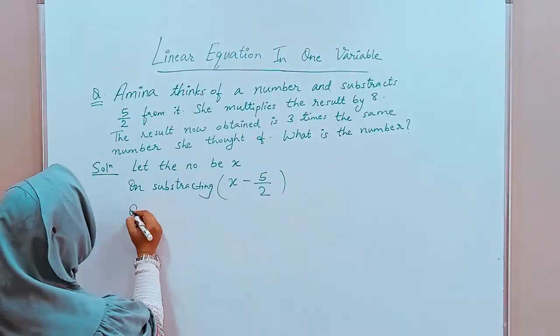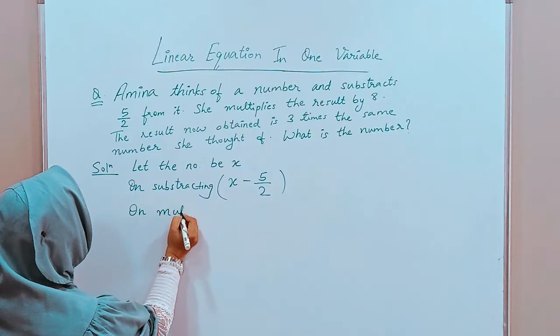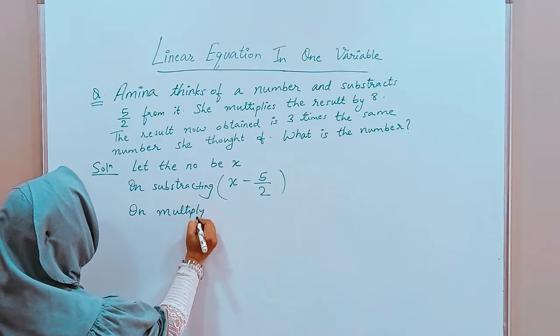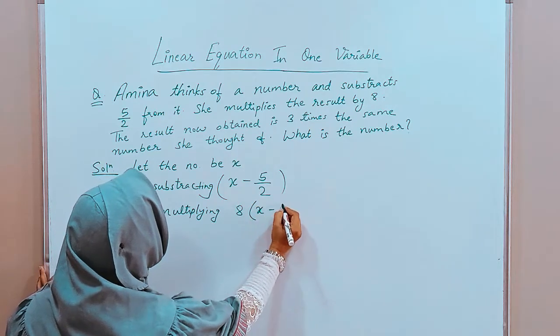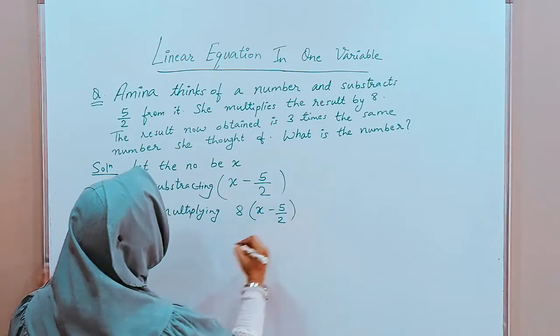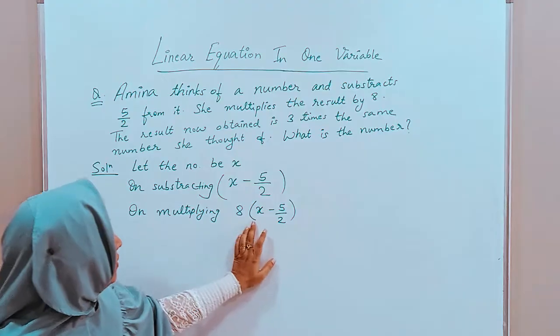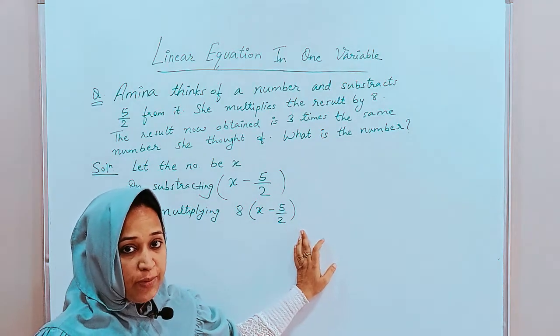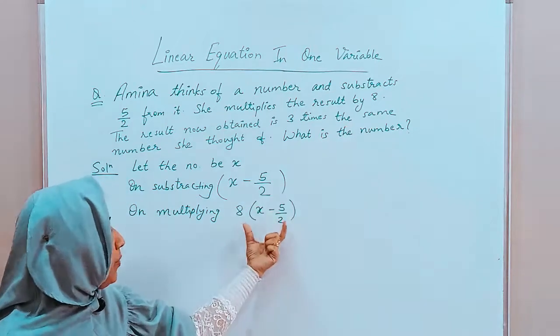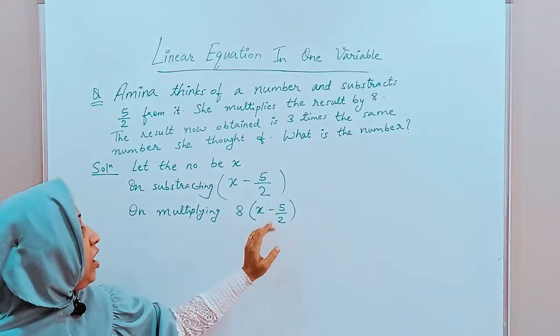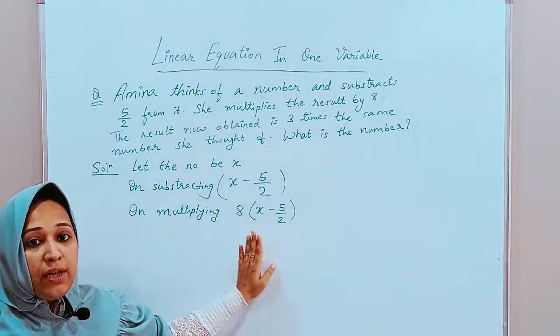So, on multiplying, it becomes 8 into x minus 5 by 2. This is the complete result x minus 5 by 2 and this result is multiplied by 8. So, the bracket is very important. If you miss the bracket, your answer will be wrong.